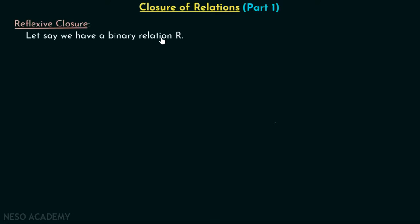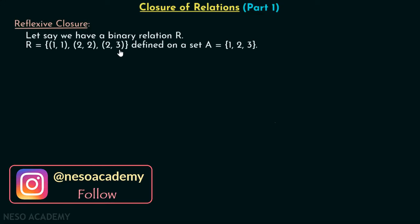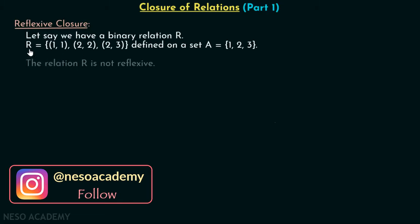Let's say we have a binary relation R. So we have this relation R, which consists of ordered pairs (1,1), (2,2), (2,3). And this relation is defined on a set A which consists of three elements: 1, 2, and 3. You can clearly see that this relation is not reflexive. Here we have (1,1), we have (2,2), but there is no (3,3) inside R. So it is clear that this relation is not reflexive.